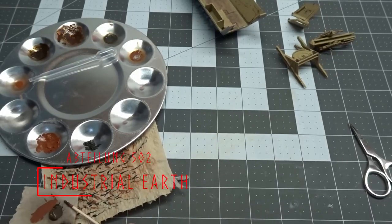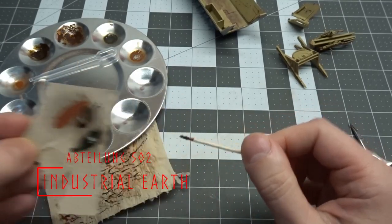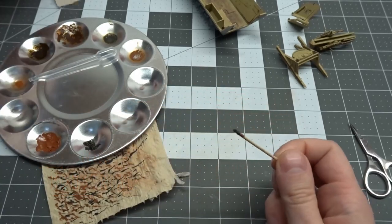Next is a pin wash over the interior pieces using industrial earth mixed with BMS Oil Expert matte.